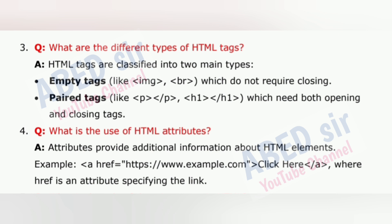Question 4: What is the use of HTML attributes? Attributes provide additional information about HTML elements. Example: <a href='https://www.example.com'>Click here</a>, where href is an attribute specifying the link.